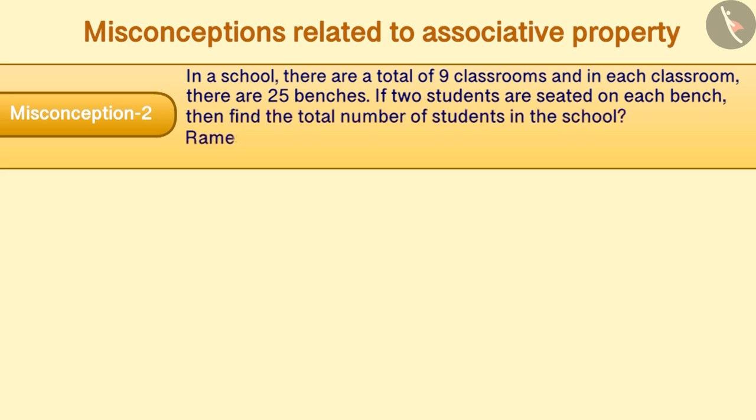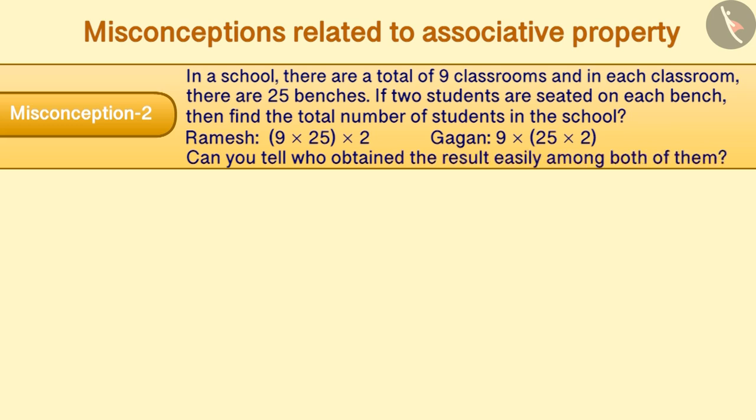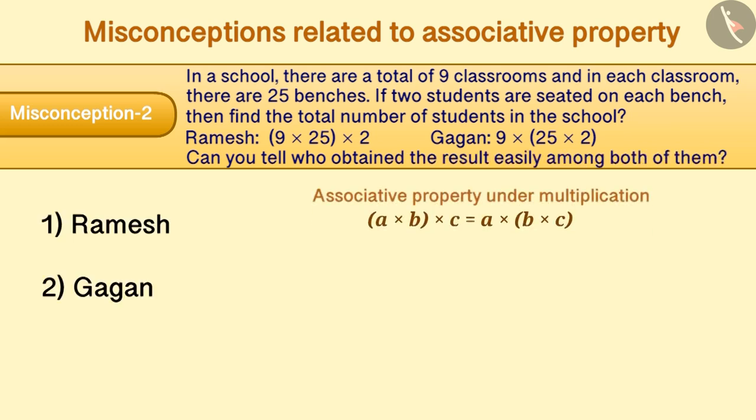Ramesh solved this question as (9×25)×2 and Gagan solved this question as 9×(25×2). Can you tell who obtained the result easily among both of them? In general, associative property is considered meaningless and is neglected.